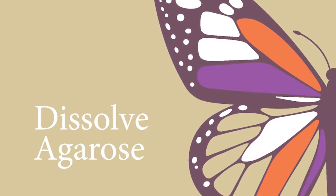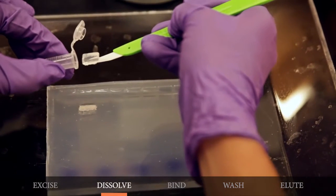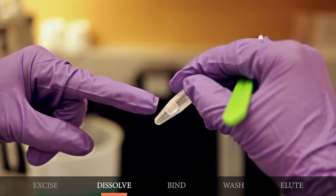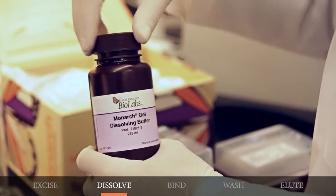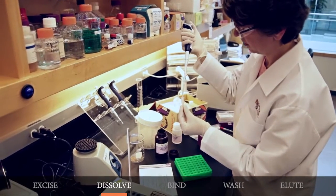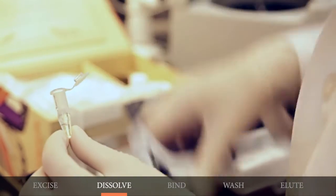Next, dissolve or melt the agarose. Transfer the excised band to a 1.5 mm microfuge tube and weigh the gel slice. Add four volumes of Monarch dissolving buffer to the tube. For example, add 400 microliters of gel dissolving buffer to 100 micrograms or 100 microliters of gel.